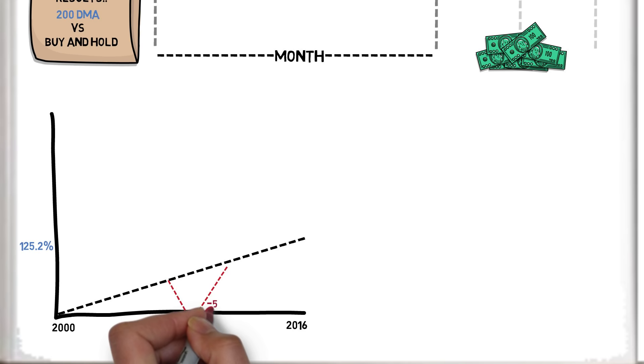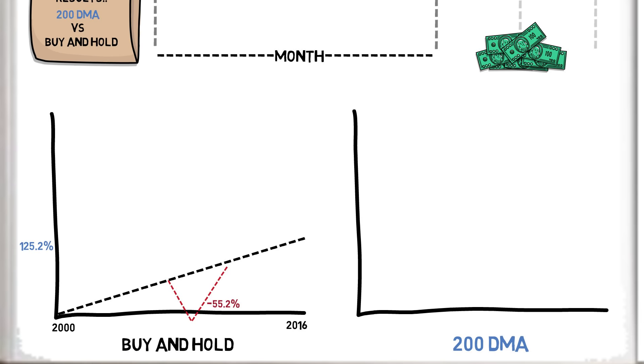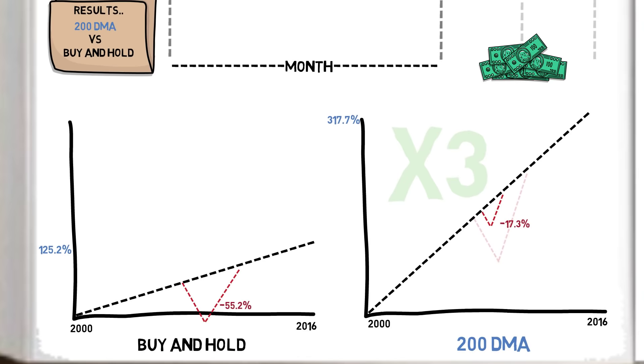If however, we followed the 200 day moving average strategy over the same period, we would have seen a return of 317.7%, with a maximum drawdown of just 17.3%, in effect tripling the returns of buy and hold whilst reducing the drawdowns by more than two thirds. In essence, a rather simple but effective trend following strategy.